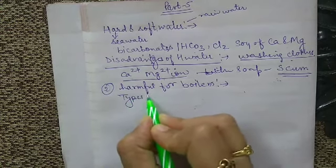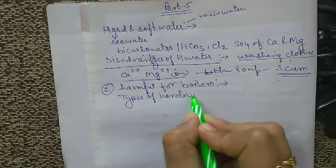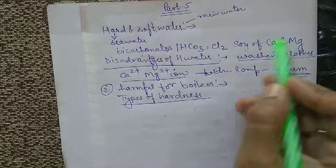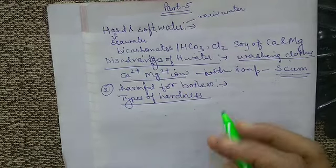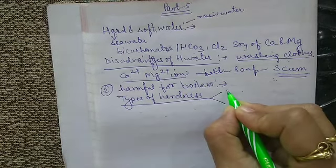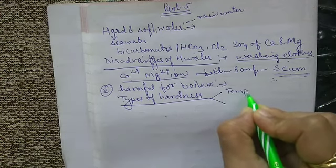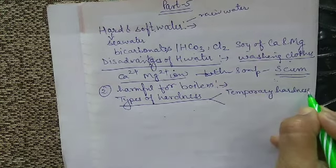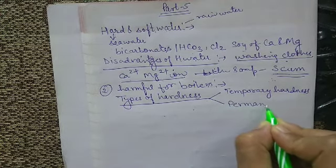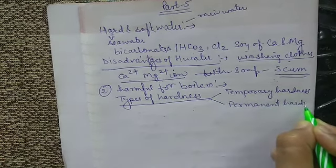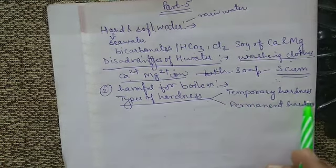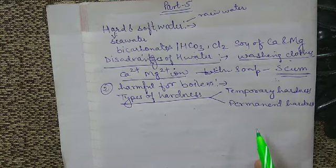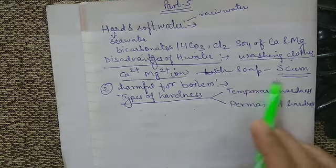Now let us discuss the types of hardness. The hardness is of two types: the first one is temporary hardness, and the second one is permanent hardness. Let us discuss them one by one, starting with temporary hardness.